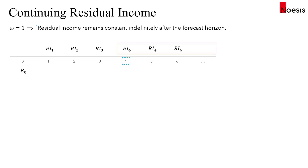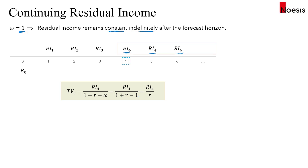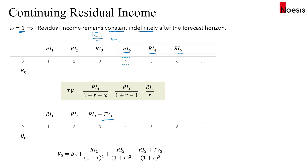Next scenario: when omega equals one, residual income remains at a constant level indefinitely after the forecast horizon. Year five, year six, and onwards take the value of RI in period four — this is nothing but a perpetuity. Substituting omega = 1 gives (1 + r − 1) = r, so the terminal value becomes RI4 / r.